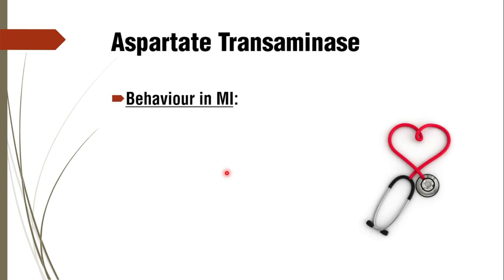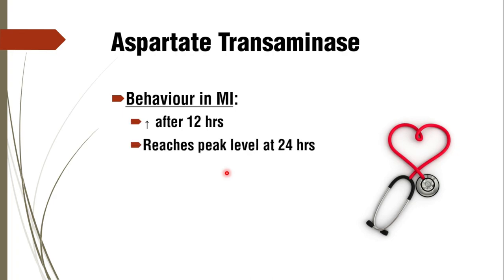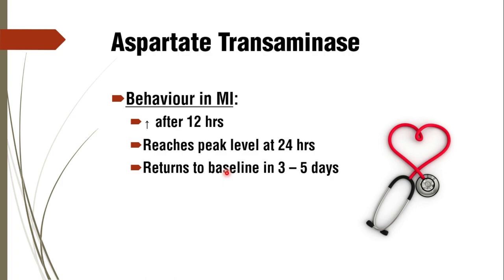Regarding the characteristic pattern of rise, peak, and fall in myocardial infarction: aspartate transaminase typically starts rising after 12 hours, reaches its peak level at 24 hours, and returns to baseline in three to five days. Although AST is no longer used clinically for this purpose, it remains part of the course content.